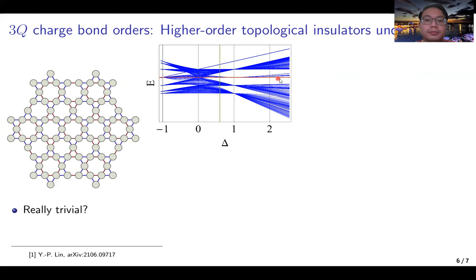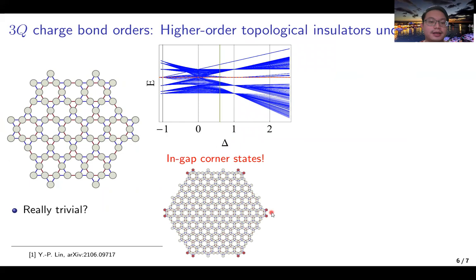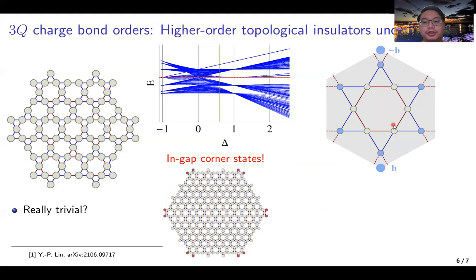These states almost overlap with the red dashed line Fermi level, so we may not be able to see it here. We map out the real space pattern of these states, and we found that the wave functions are well localized at the corners, so these are the in-gap corner states.